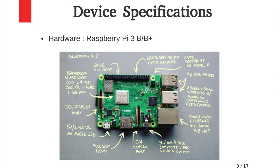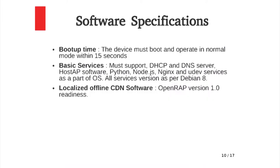Further support for websites like IIT Bombay X and Spoken Tutorial will also be covered. The device specifications for the scope of this project are the Raspberry Pi. A disclaimer: the current build of OpenWrap only supports Raspberry Pi model 3B and not 3B+. These are the software specifications — you can briefly go over them.